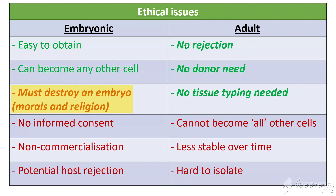For adult stem cells, the pros are that there's no rejection — if you're using cells from your own body, there's no risk from mismatched genetic material, so you don't need a donor. No tissue typing is needed either, which is the lab process of testing whether tissues will match and whether rejection is likely. A con, however, is that adult stem cells cannot become all other cell types — they have limited differentiating properties. For example, bone stem cells may only become other bone cells.